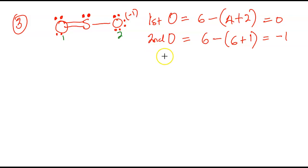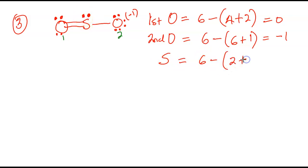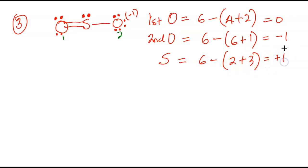And then let's do the sulfur. For the sulfur — sulfur is also in group six like oxygen — so it's going to be six minus. How many dots does it have? It has two dots, plus how many bonds? It has three bonds. Two plus three is five. Six minus five is going to give you plus one. So here it is going to be plus one.